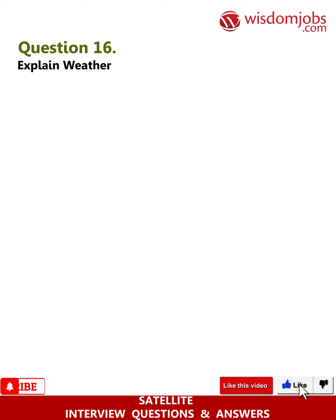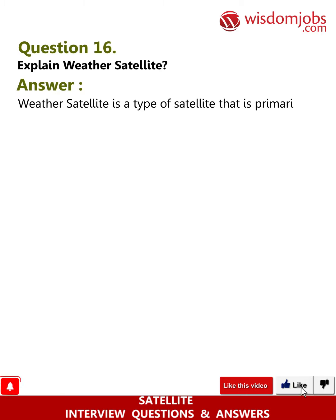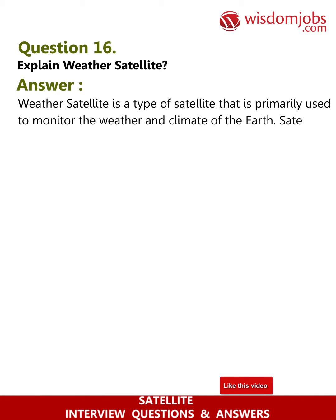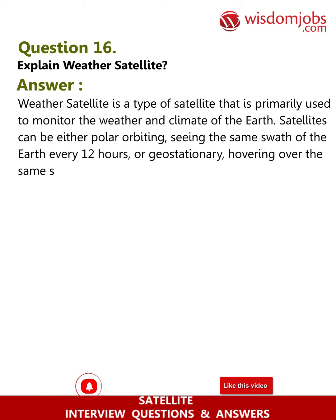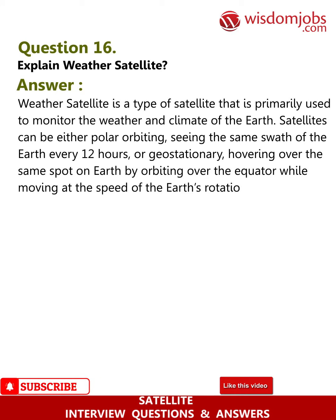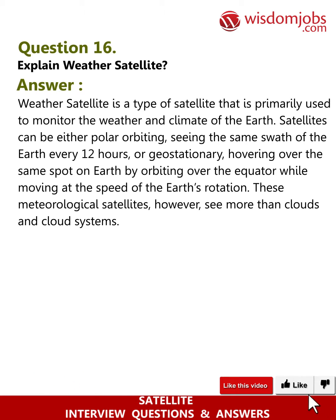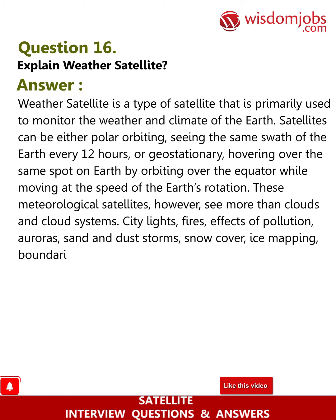Question 16: Explain whether a weather satellite is a type of satellite primarily used to monitor the weather and climate of the earth. Weather satellites can be either polar orbiting, seeing the same swath of the earth every 12 hours, or geostationary, hovering over the same spot on earth by orbiting over the equator while moving at the speed of the earth's rotation. These meteorological satellites see more than clouds — city lights, fires, effects of pollution, auroras, sand and dust storms, snow cover, ice mapping, boundaries of ocean currents, energy flows, etc.